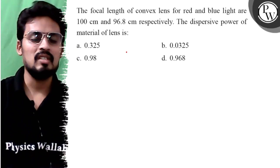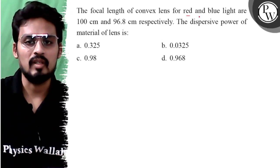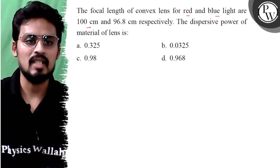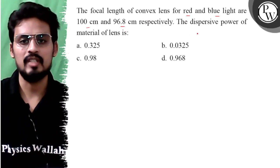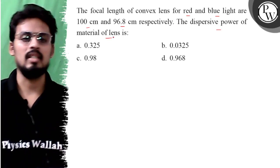Hello, let's see this question. The focal length of a convex lens for red and blue color are given as 100 cm and 96.8 cm. The dispersive power of the material of the lens is.